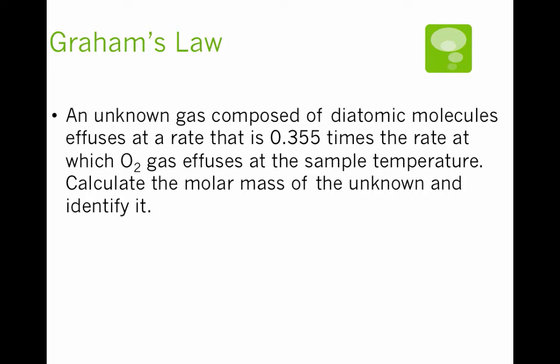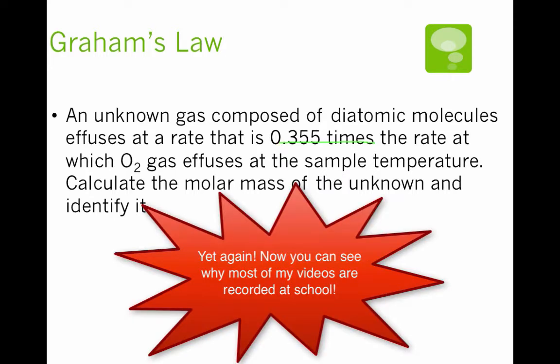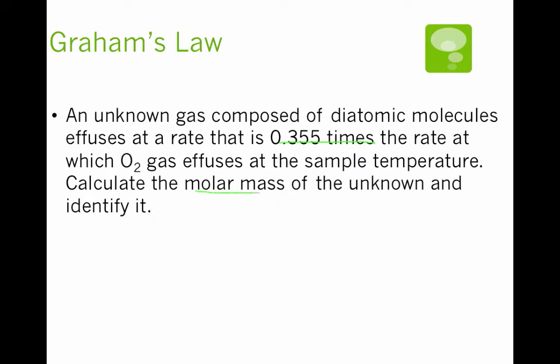So what I want to do is I want to look at a calculation that deals with Graham's Law. This deals with rates of the movement of gases and their molar masses. So this says an unknown gas comprised of diatomic molecules effuses at a rate that is 0.355 times the rate at which O2 effuses at the same temperature. Calculate the molar mass of the unknown and identify it. So let's write the equation for Graham's Law. Graham's Law says that the rate of gas 1 over the rate of gas 2 is proportional to the square root of the molar mass of gas 2 over the molar mass of gas 1.